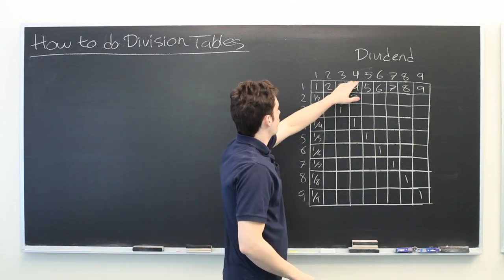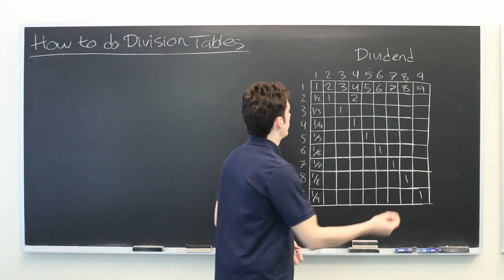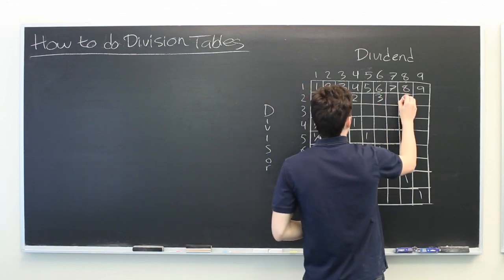So let's look at the even numbers and divide them by two. Six divided by two is three. Eight divided by two is four.